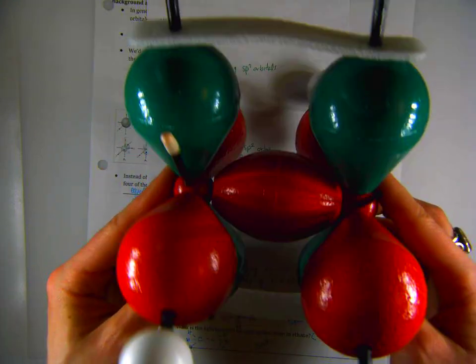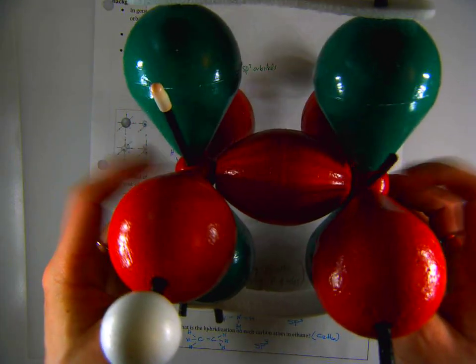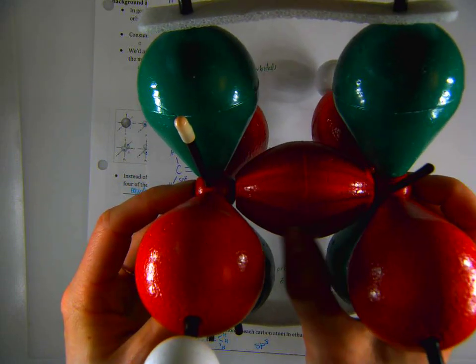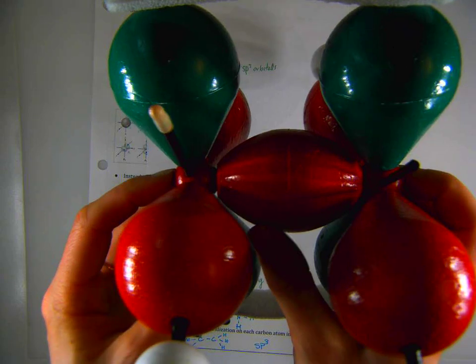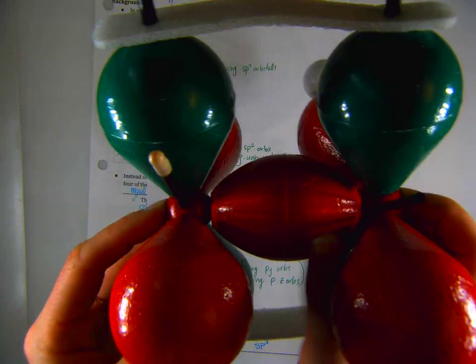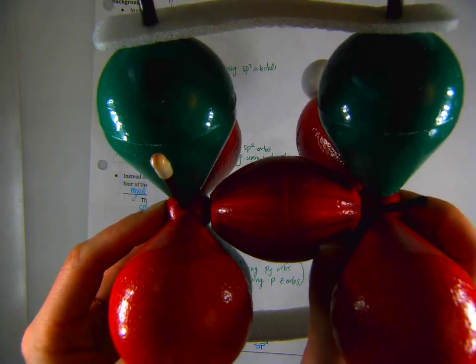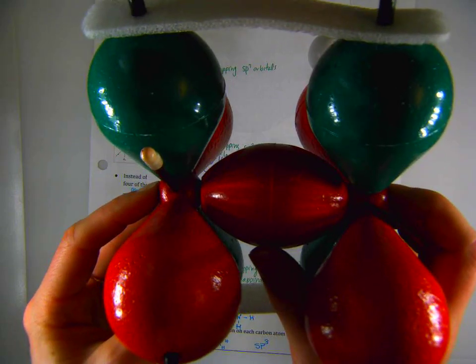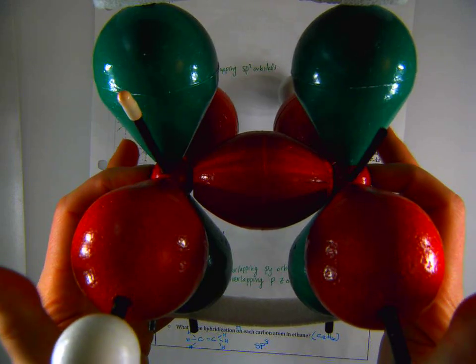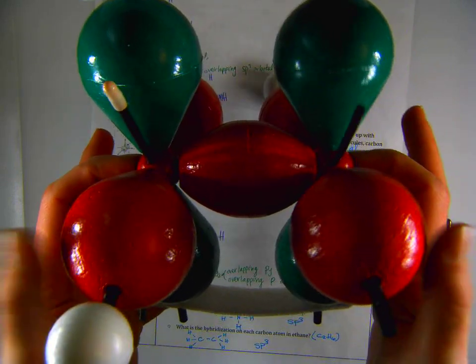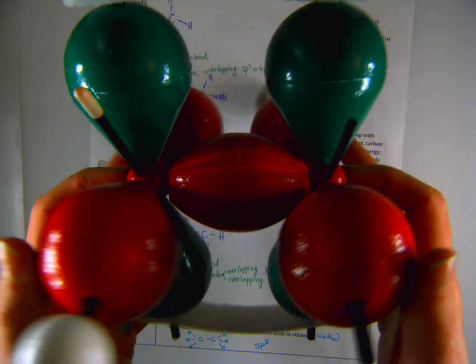So let's look at this model here. In this case, I've got my two carbon atoms here. One of the sp2 orbitals from each carbon is overlapping to create the sigma bond across the center. That looks just like the last one. The other sp2 hybridized orbitals are bonded to the hydrogens.